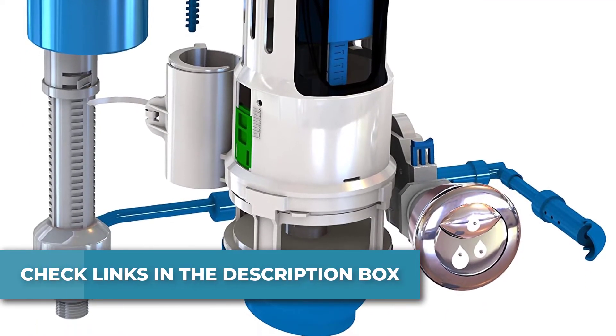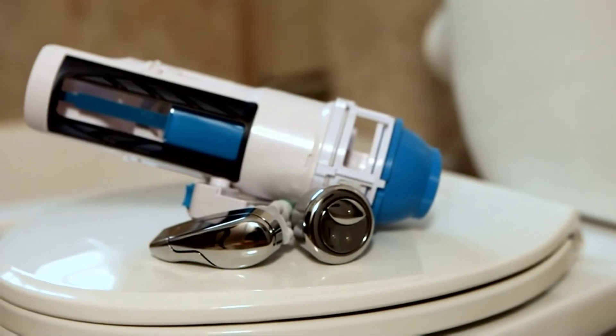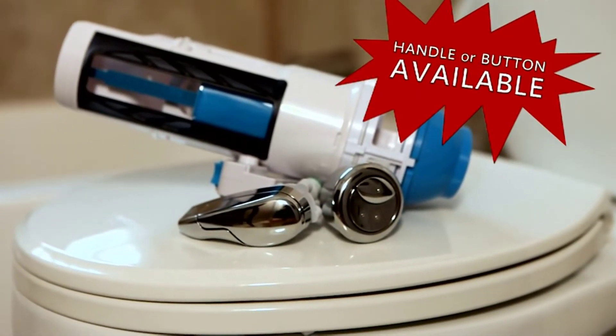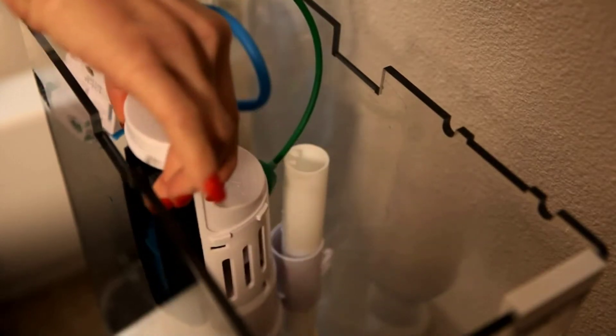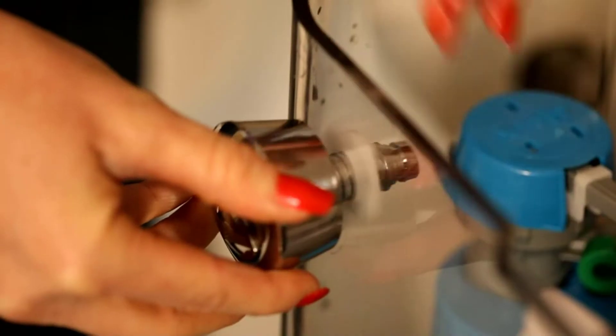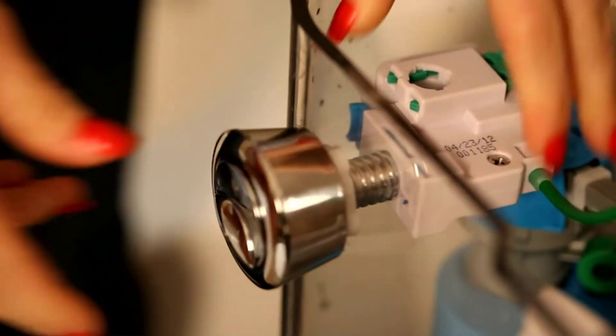Eliminates common leaky toilet problems due to a worn-out flapper, handle, or faulty flapper chain. The short center lever is the quick flush setting that uses significantly lower water volumes for liquids and paper. The setting needed 4 out of 5 times. The second complete push lever at the end is the full flush that uses the normal amount of water for solids.